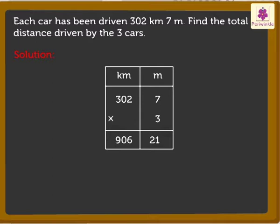So, we get 906 kilometers. Here we get the product as 906 kilometers 21 meters. Thus, the three cars drove 906 kilometers 21 meters in all.